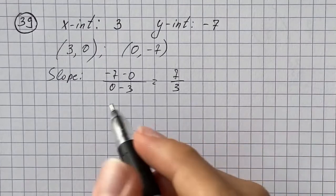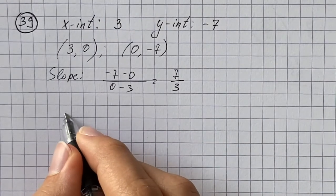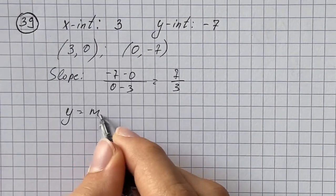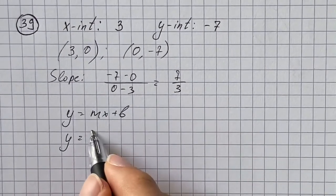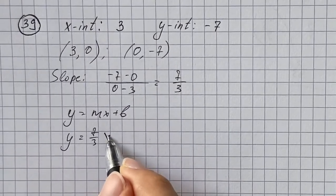And now I'm going to use equation y equals mx plus b. Therefore we figured out the slope, which is 7/3 x.